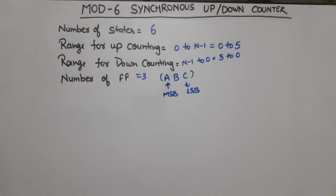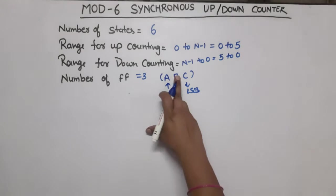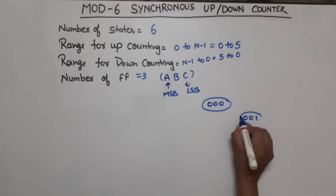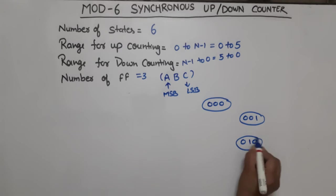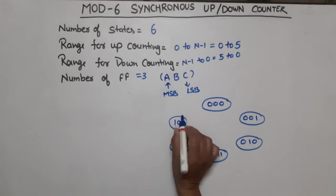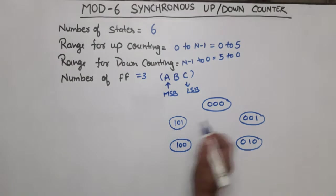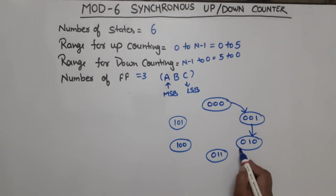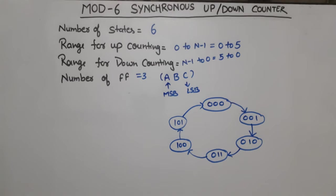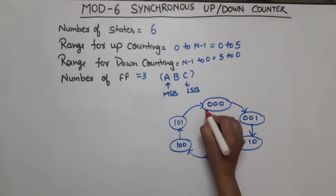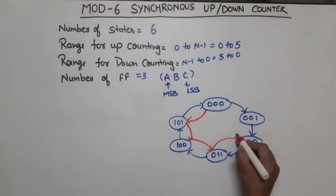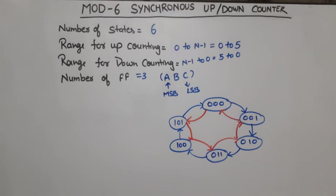Now let's draw the state diagram with states A, B, C. The 6 states for up counting are: 000, 001, 010, 011, 100, 101 — that is 0 through 5. The up counting sequence goes: 0→1→2→3→4→5→0. For down counting the sequence goes: 0→5→4→3→2→1→0.